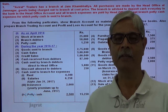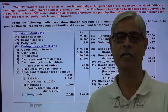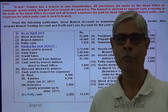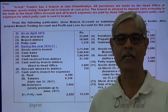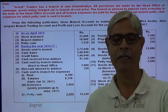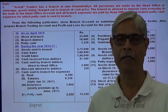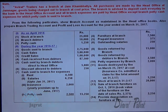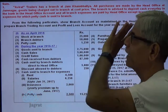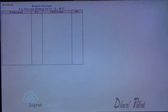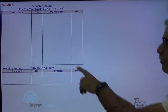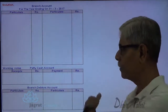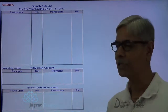Because of these important points, I wish to solve this sum by data system. In data system, we are required to prepare a branch account to find out the profit. We prepare working notes for petty cash, data account, etc. Petty cash account and data account are prepared in working notes. Let us start with the sum. Remember, goods are sent at cost price. So this is the branch account, working note petty cash account, and branch debtors account.